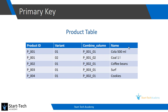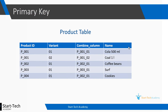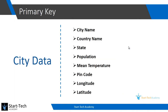Now try to think of a primary key when you have data of different cities, and you have attributes such as city name, country name, state, population, mean temperature, pin code, and longitude and latitude of that city. Pause this video for 5 to 10 seconds and try to identify the primary key in this data.